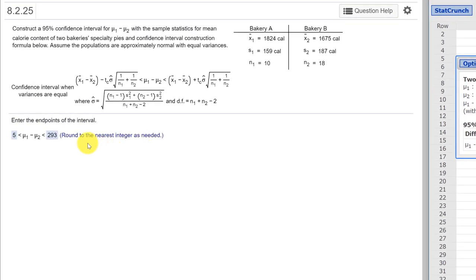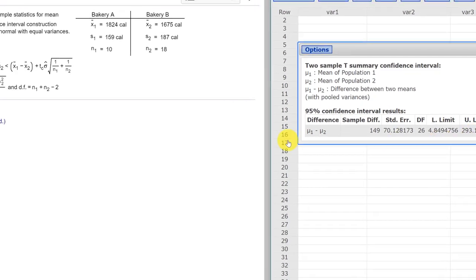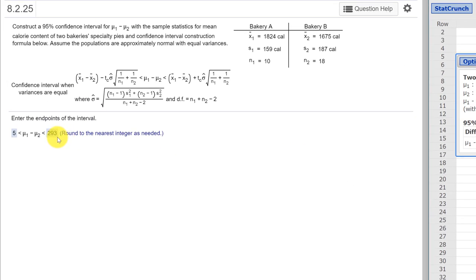If we look over here, they say round to the nearest integer. And in MyStatLab, it's critical you give them exactly what they asked for. So if we round 4.8 to the nearest integer, that would be 5. And 293.15 rounded would be 293, which is the values they have here.